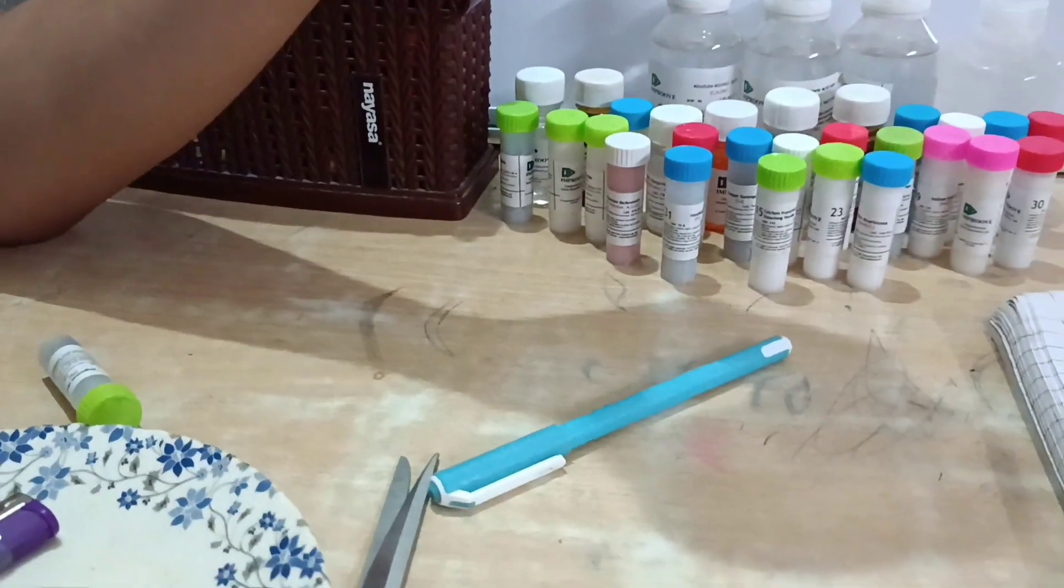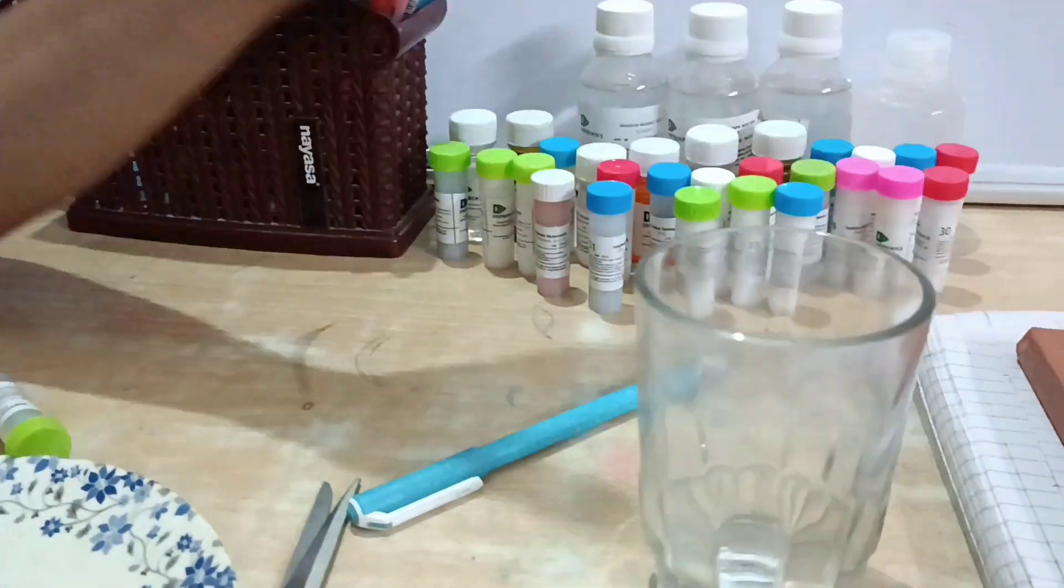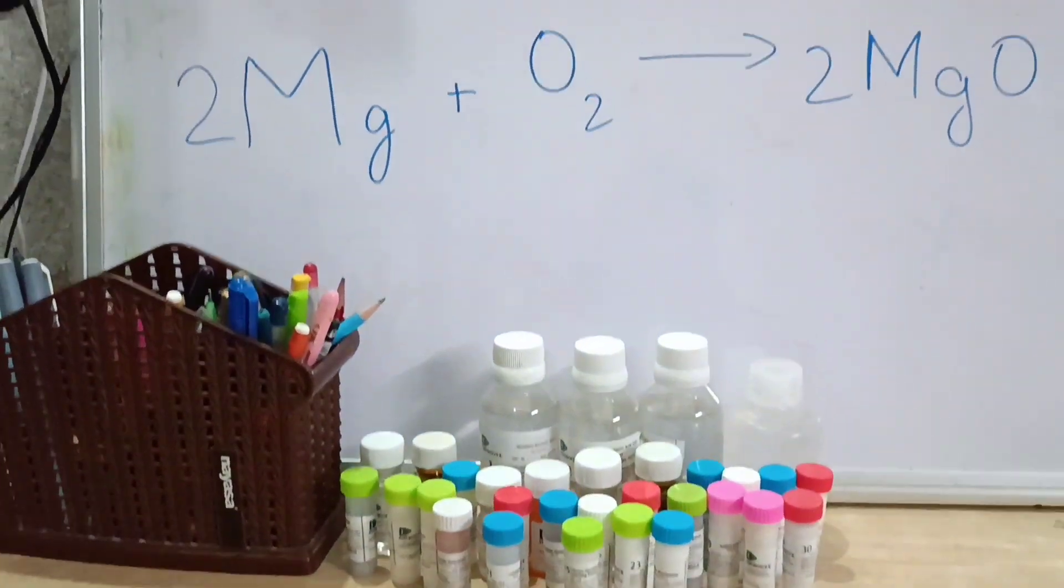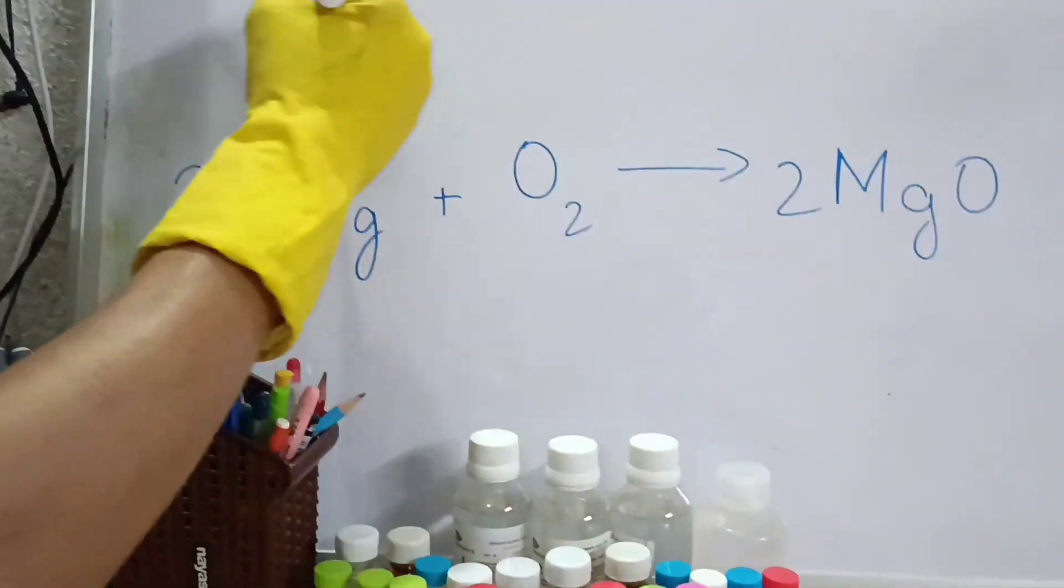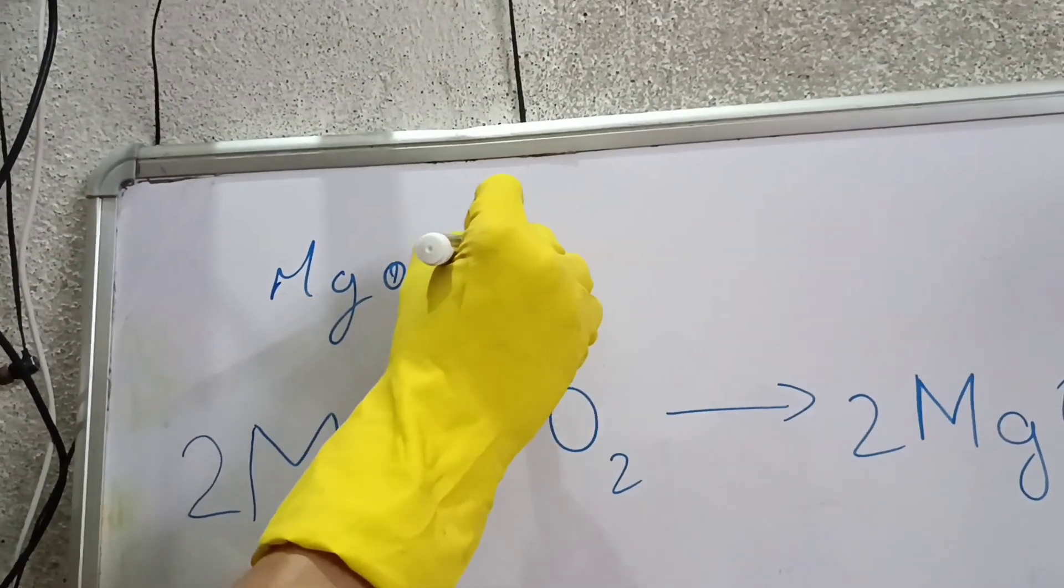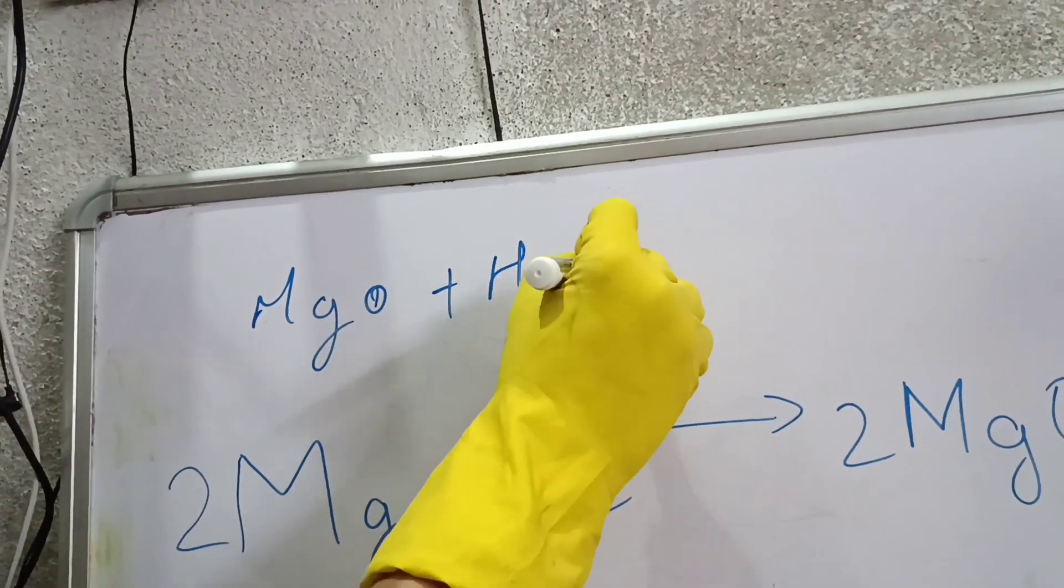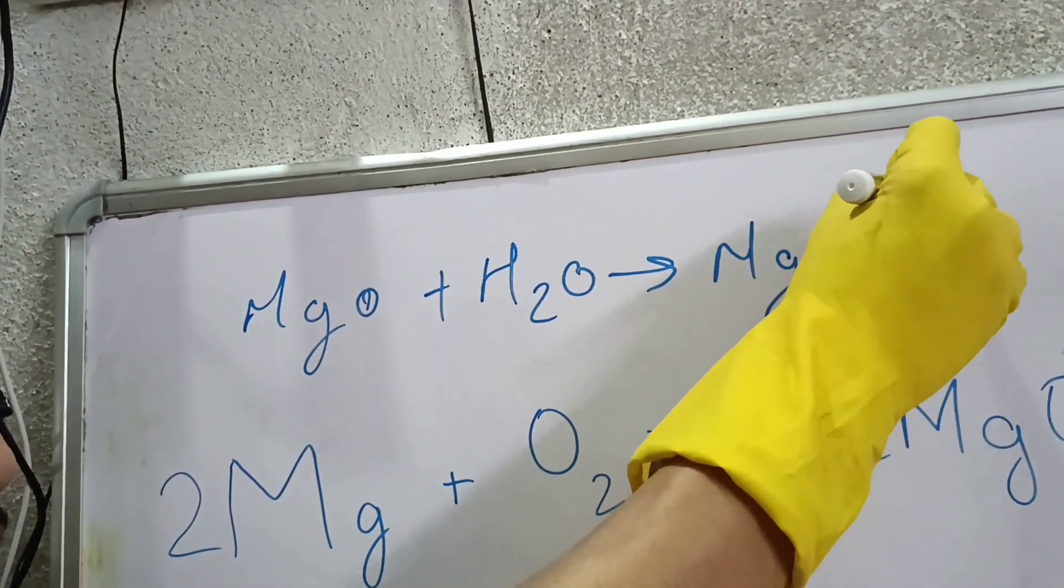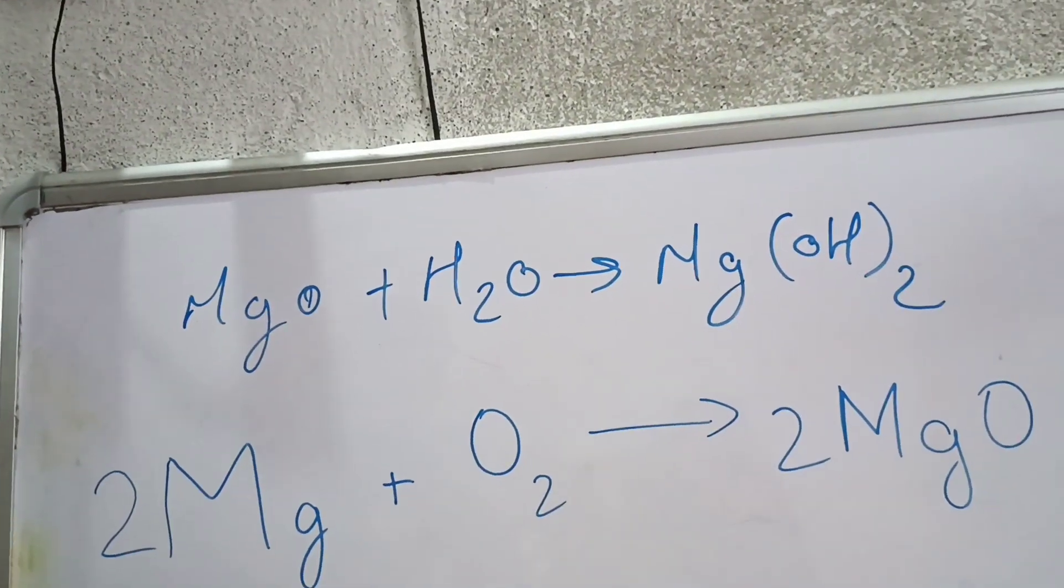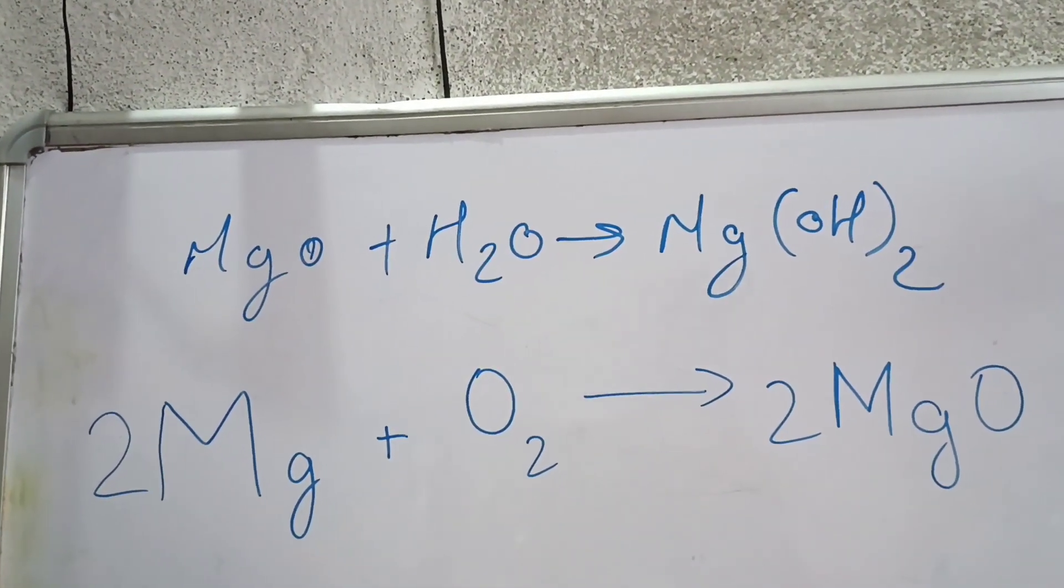If you add the H2O, if we add the H2O, it will be Mg(OH)2, which means magnesium hydroxide.